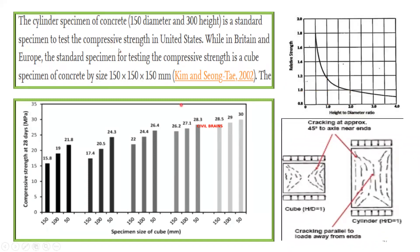The crack pattern, as mentioned in the previous lecture: for a cube, due to the restraining effect, you don't get vertical cracks — the crack pattern goes in this particular way. Whereas in the cylinder, you get vertical cracks toward the edges due to the restraining effect, giving a different crack pattern. These things are also clear now.